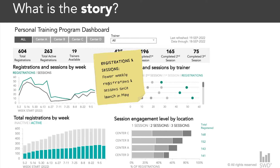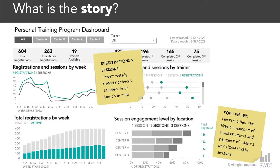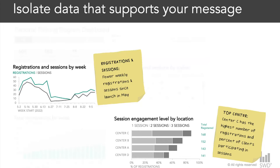We want to review with marketing what we could do to make another push leading into the holiday season. Another thing we see in the graph on the lower right is that different locations are more effective at getting their members to actually attend the training sessions — which is key to getting clients to see the value of the program. There are certainly strategies we could leverage from those performing better and test across other locations. As a result of these findings, we want to meet with marketing to drive more awareness and engagement. Since we want a targeted conversation, we do not want to share the entire dashboard because it includes a lot of additional data that can distract from our main message.